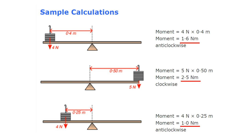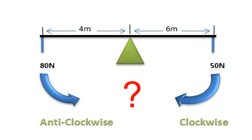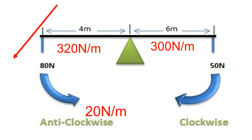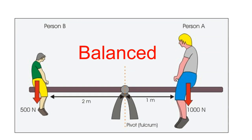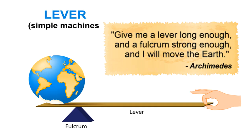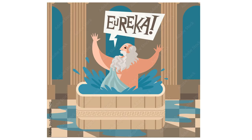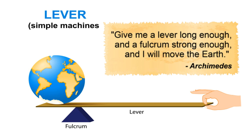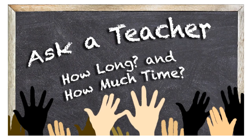Example: on the left side 4 N × 0.4 m = 1.6 N·m anti-clockwise. For a seesaw, if the right side gives 6 × 50 = 300 N·m and the left gives 4 × 80 = 320 N·m, it turns anti-clockwise with a net moment of 20 N·m. A seesaw can be balanced even with unequal masses if the lighter person sits proportionally further from the pivot.